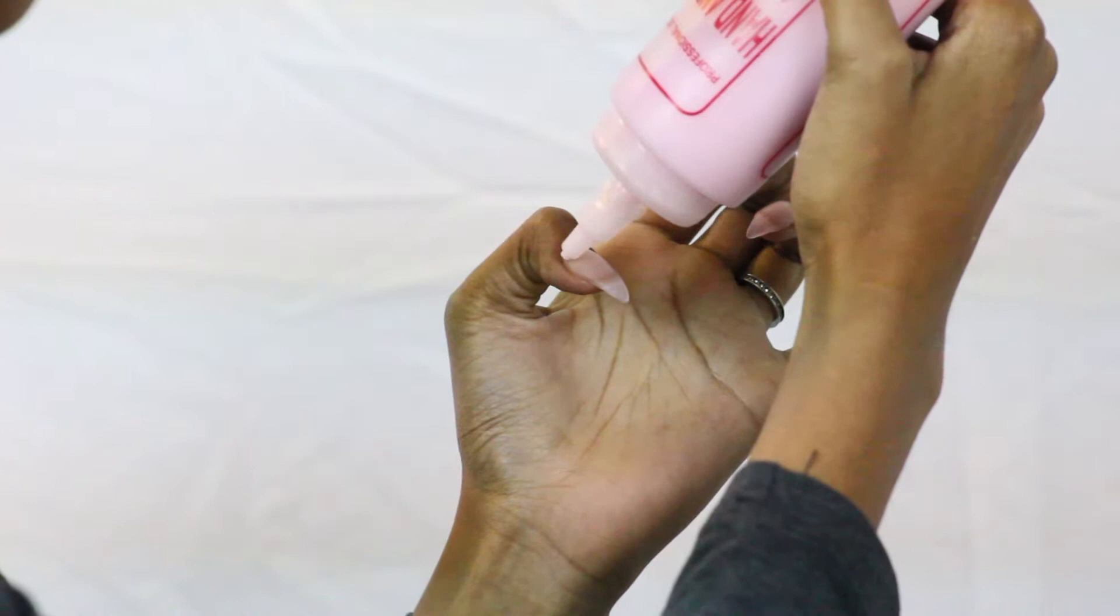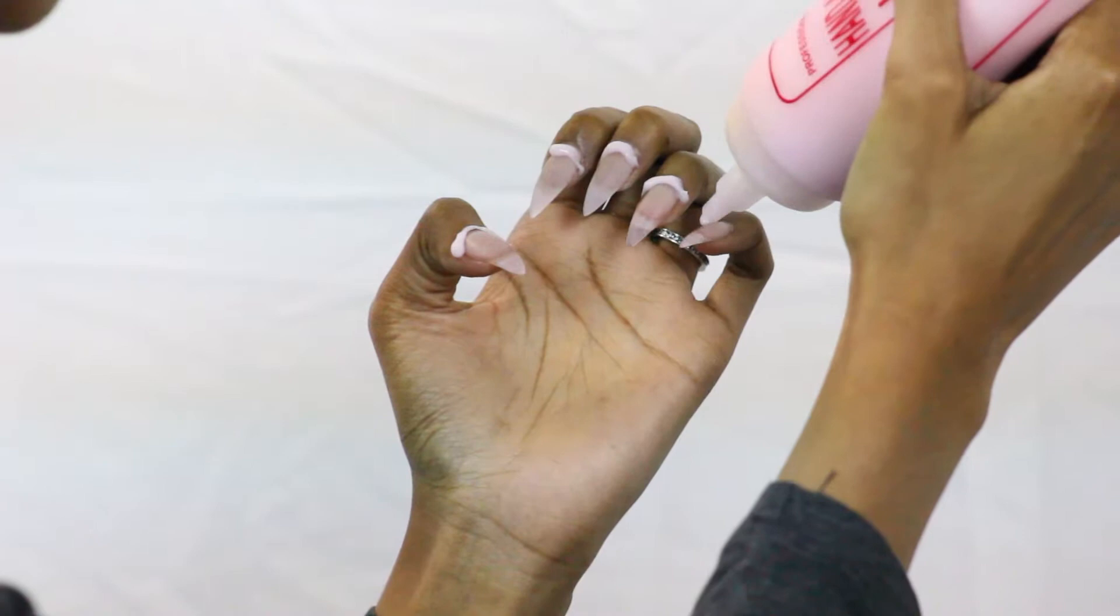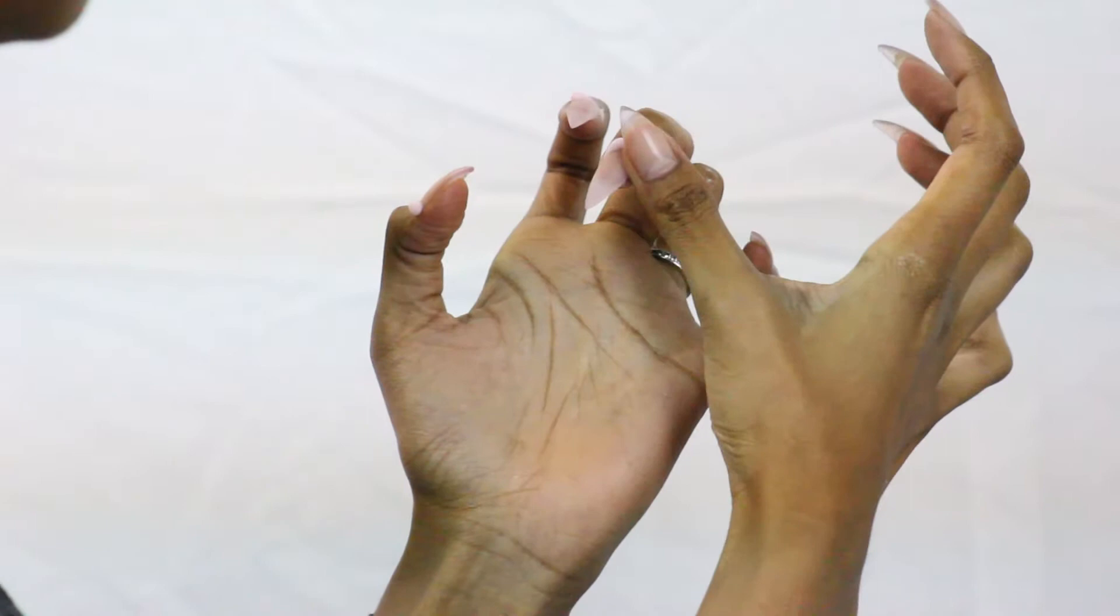Applying lotion, hand lotion onto your cuticles. Just go right around each finger. You want to apply this to all ten fingers. Go ahead and rub it in and get it moisturized.